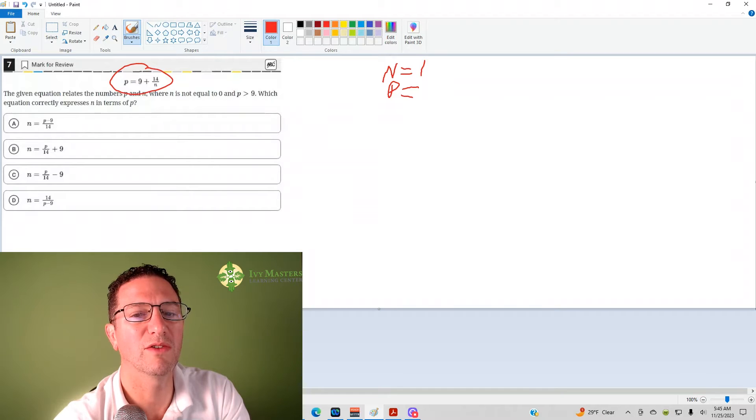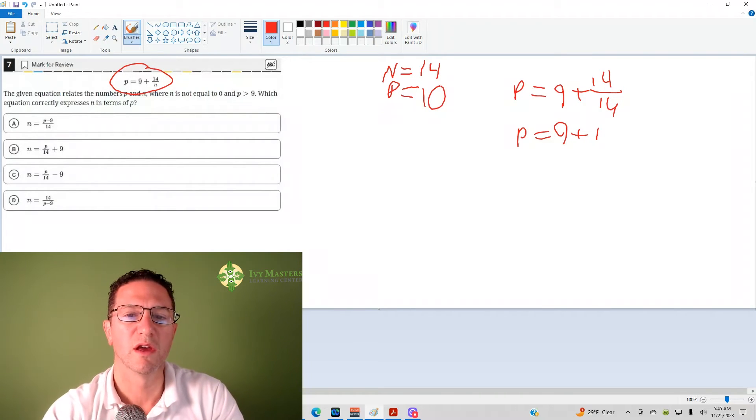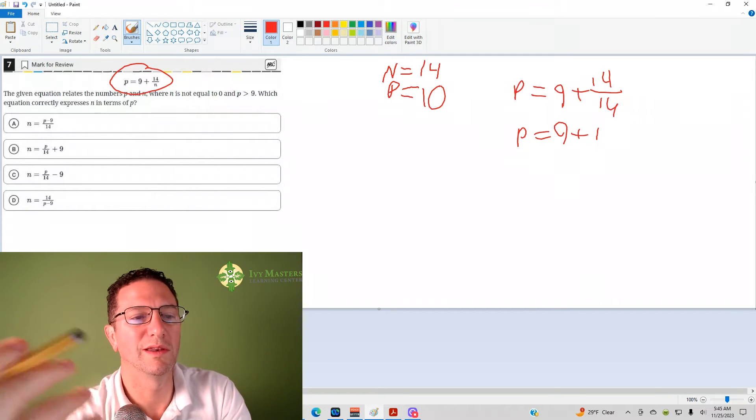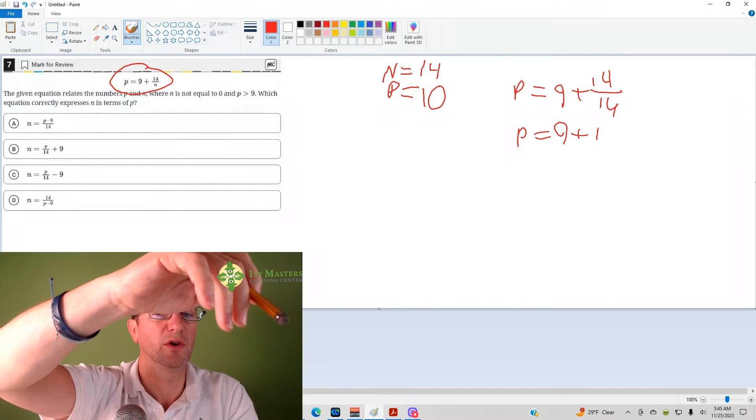So we want to make it so that we have a whole number. I'm going to make my n equal 14. So then it becomes p equals n plus 14 over 14, so p equals n plus 1, so p is equal to 10. Other good choices for n would be 2, 7, anything that's going to give you a whole number.